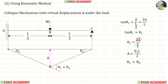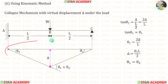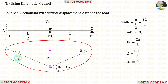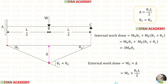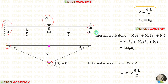To express delta, we rearrange to get delta = theta 1 · L upon 2. Due to the symmetrical nature of the triangle, theta 1 equals theta 2. In this propped cantilever beam there are 2 plastic hinges: one at the fixed support and one under the load. At the simply supported end there is no plastic hinge. So there are 2 plastic hinges in total.